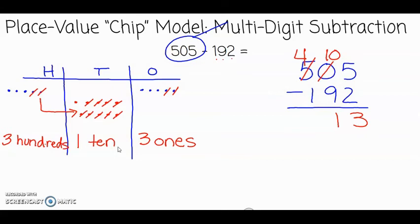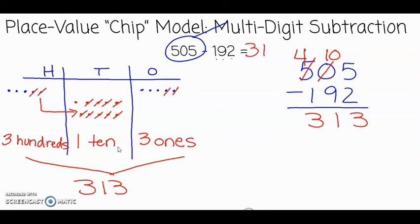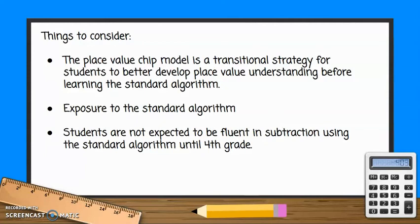Let's look at the algorithm: I have four hundred minus one hundred is three hundred. So 505 minus 192 equals three hundred thirteen. The place value chip model is a transitional strategy for students to better develop place value understanding before learning the standard algorithm. We do show students the standard algorithm for subtraction alongside the place value chip model so that students have a better understanding of why the algorithm works.